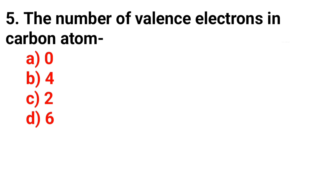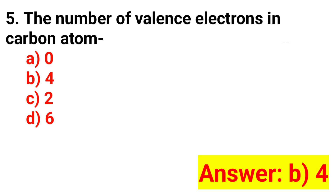Question 5. The number of valence electrons in a carbon atom? The answer is Option B: 4.